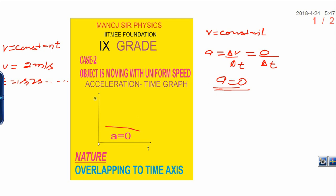If acceleration becomes zero, it means the nature of the graph is overlapping the time axis. Thank you very much.